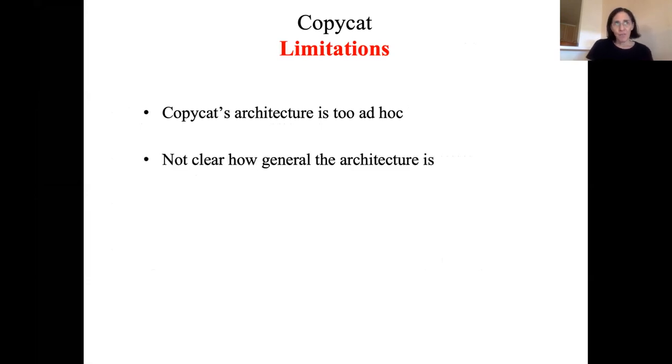But copycat was interesting, but it has a lot of limitations. Its architecture is fairly ad hoc. There's no elegant mathematical framework like there is in Bayesian program induction. It's not clear how general the architecture is. And the concepts are given, they're not learned. That's been true for some of these other methods, but the neural network method, everything is learned from many, many training examples.